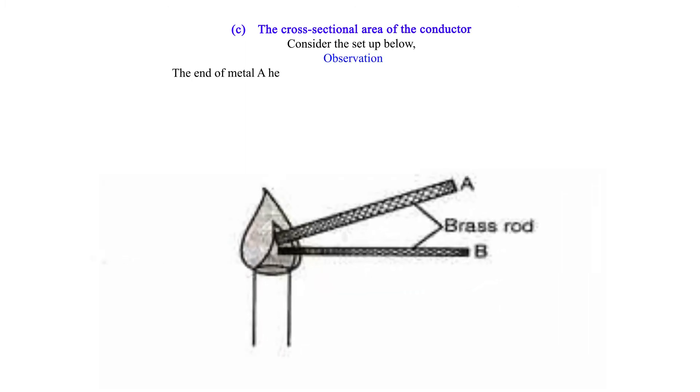Observation: The end of metal A held in the hand becomes too hot earlier than metal B. Thermal conductivity increases with increase in area of cross-section of the conducting material.